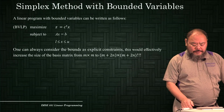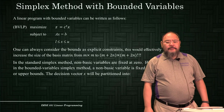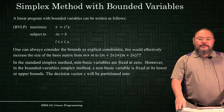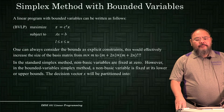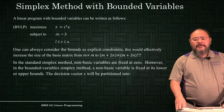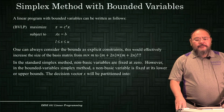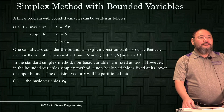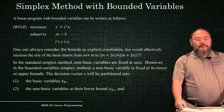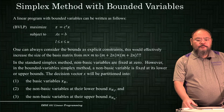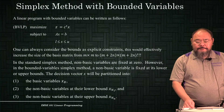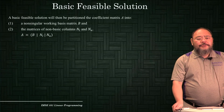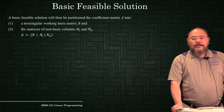In the standard linear program, non-basic variables are usually fixed at zero — that's basically their lower bound of zero. However, in the bounded variable simplex method, non-basic variables can be fixed either at their lower bound or their upper bound. So the decision vector x can be partitioned into three parts: the basic variables xB, the non-basic variables at their lower bound xNL, and the non-basic variables at their upper bound xNU.